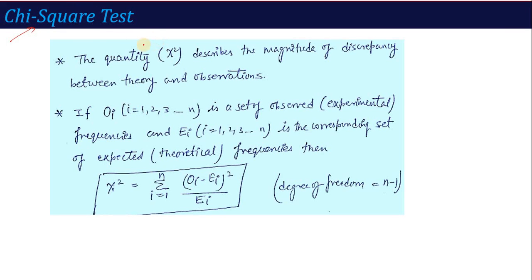Chi-Square test: the quantity Chi-Square describes the magnitude of the discrepancy between theory and observation. Theory is our expectation, and the actual experimental results — the difference between them is represented by the term Chi-Square.